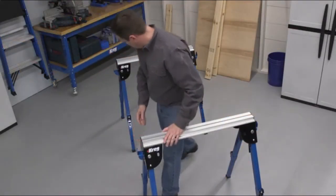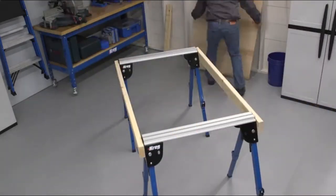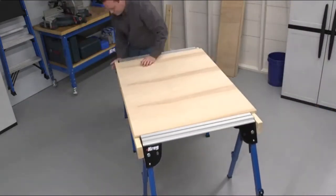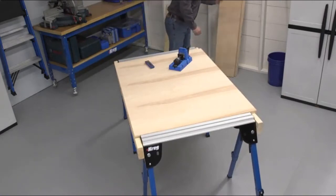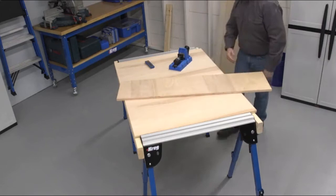Or, reposition the brackets and 2x4s and you can span between two Trackhorses with 3/4 inch plywood to create an extra large work table with built-in clamping. That means you can create a big workbench and a sturdy one that can hold up to 2,200 pounds.